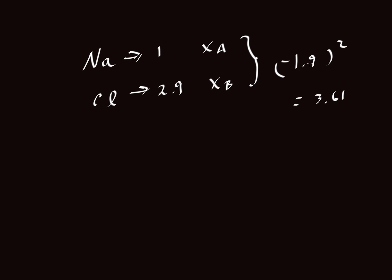We'd still get the same answer. Whether we carry the negative sign through or not, it doesn't matter because by squaring it, we get rid of that negative sign. So (Xₐ minus Xᵦ) squared is equal to 3.61.